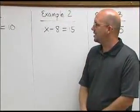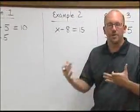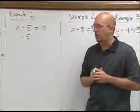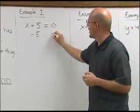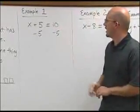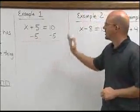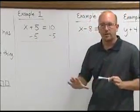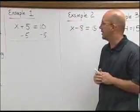But, because I need to remember that I need to do the same thing to both sides, keep my teeter-totter balanced, I need to subtract 5 from the other side as well. As long as I do the same thing to both sides, everything is okay. My equal sign is good.